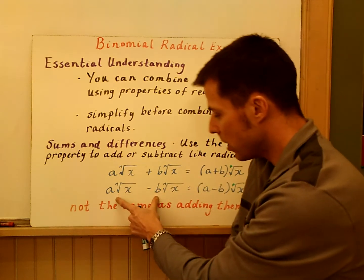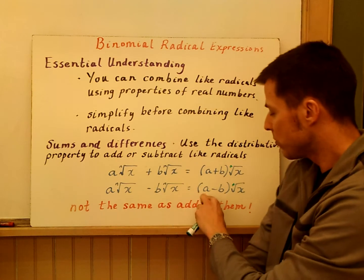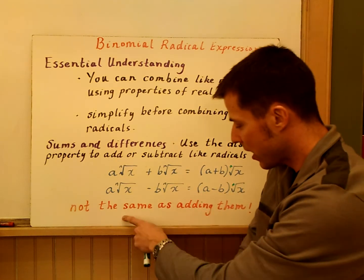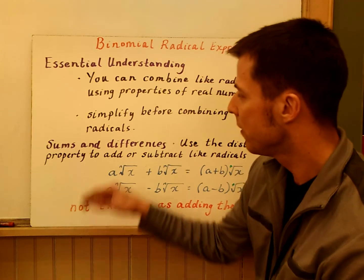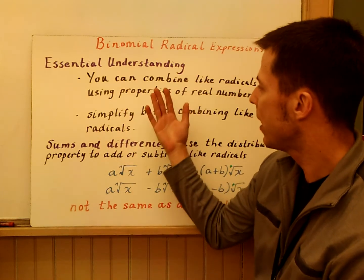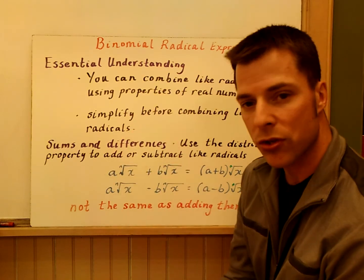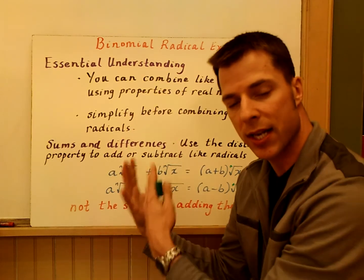Here if you're subtracting, you can just subtract a minus b times nth root of x. Be careful, this is not the same thing as addition. That's what we're going to look at. Combine like radicals. We can use properties of real numbers. Keep in mind that try to simplify first and we'll see examples of both.